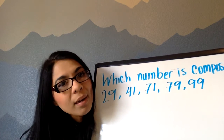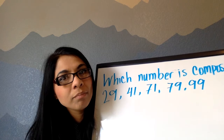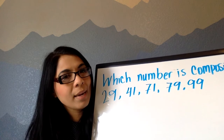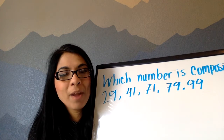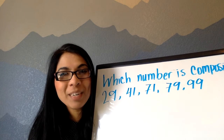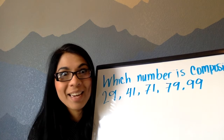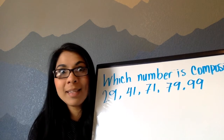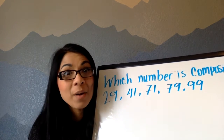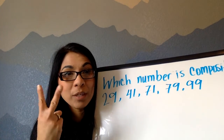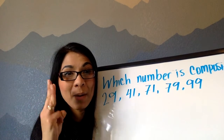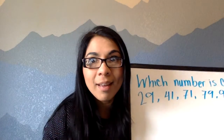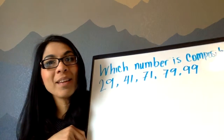How about 99? 99 is divisible by 3 because 3 times 33 equals 99, and 1 times 99 is 99. I already have more than 2 factors — now I have 3 factors. I already know that 99 is my composite number.